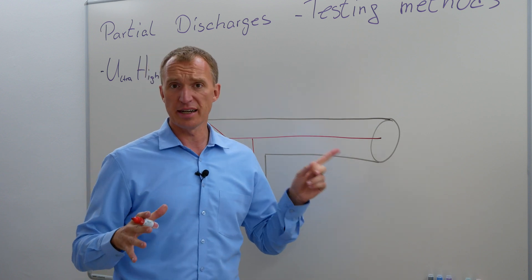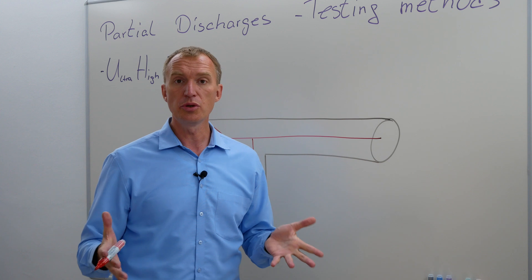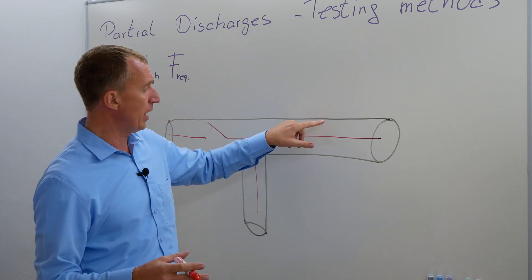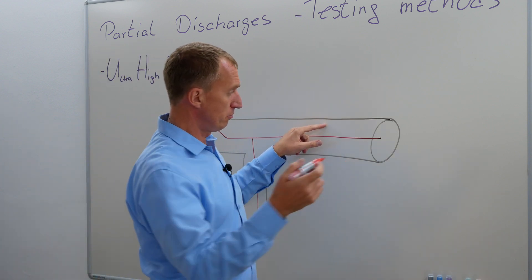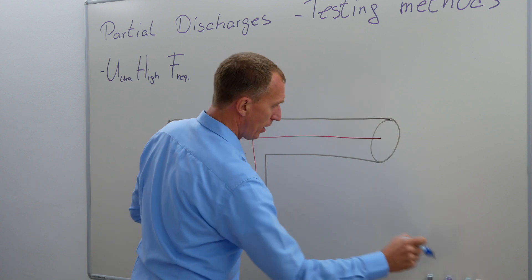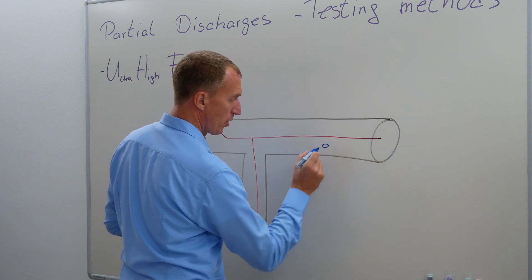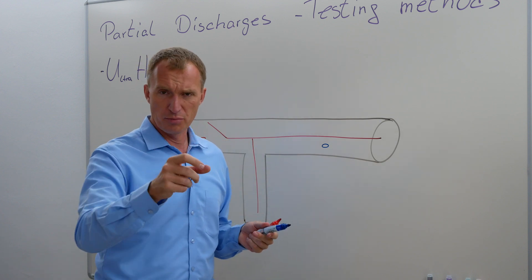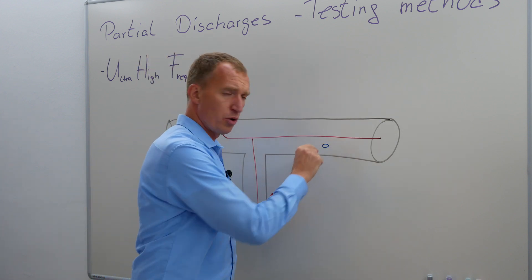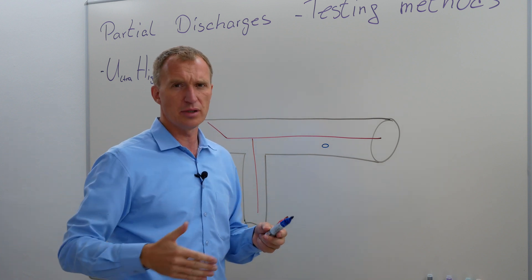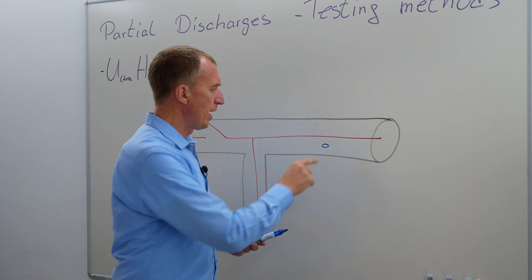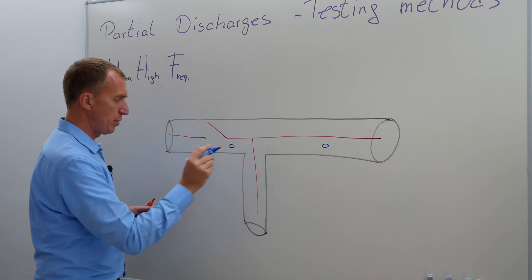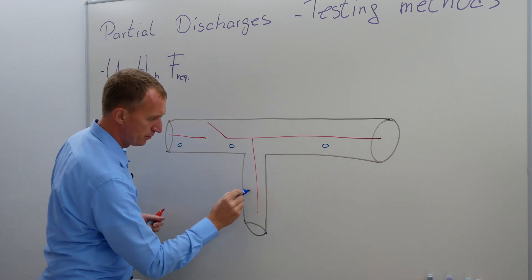If you want to measure inside the GIS, you have the possibility to use UHF sensing as well, so ultra-high frequency testing. What you can do is, you have two approaches if you want to use UHF. Either there are these small windows over here that allow you to look inside, but the most important thing is, they have a small hole in the metal encasement, and they have some kind of insulation material, something like acrylic glass. You can place a sensor here, and maybe you have another one here, or maybe here.